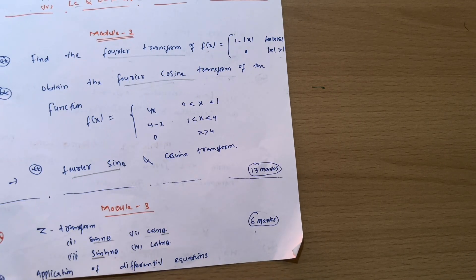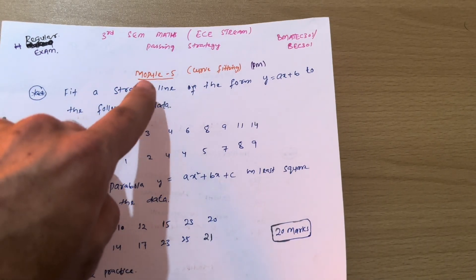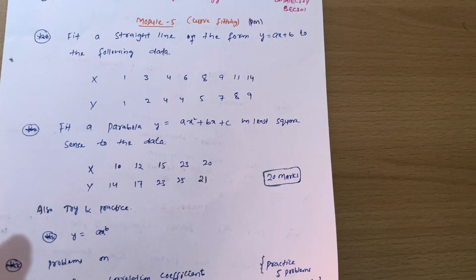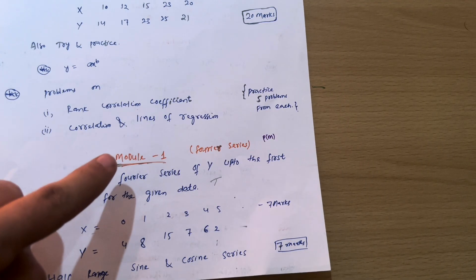So this becomes your passing package for your mathematics subject. So first of all, it is compulsory to cover module 5th, that is curve fitting. So surely you should have hold down module 5th in order to get 20 marks. Next we have Fourier series.